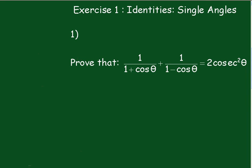Exercise 1, Identities, Single Angles, number 1. Prove that 1 over 1 plus cos theta plus 1 over 1 minus cos theta equals 2 over cos squared theta. Okay, just pause the video and have a go at this one.